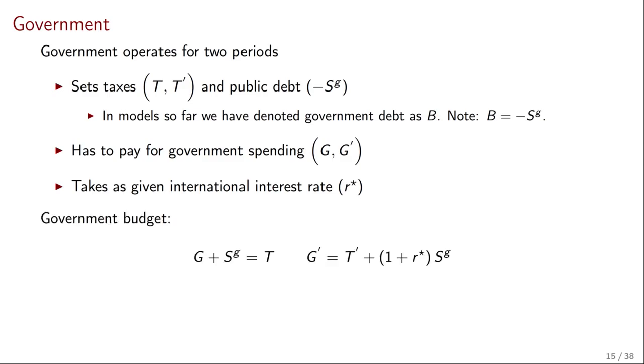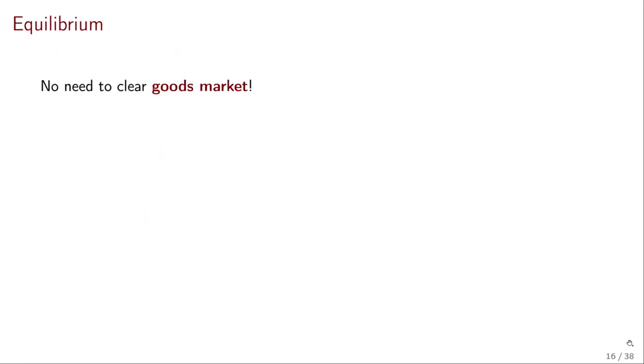The budget of the government we've seen before. So the present period budget is going to have government spending G plus the government savings equal to the amount of taxes. And in the future, we're going to have government spending equal to taxes plus the returns on the savings. Of course, if the government wants to borrow, it can just has to set SG to be negative. Now, the same as before, we can join these two into a present value budget constraint for the government with the present value of government spending being equal to the present value of all taxes. And then we define the government savings as what is left of taxes net off. And this is a typo. This should be a G. I'll fix that in the slides I'm going to post.